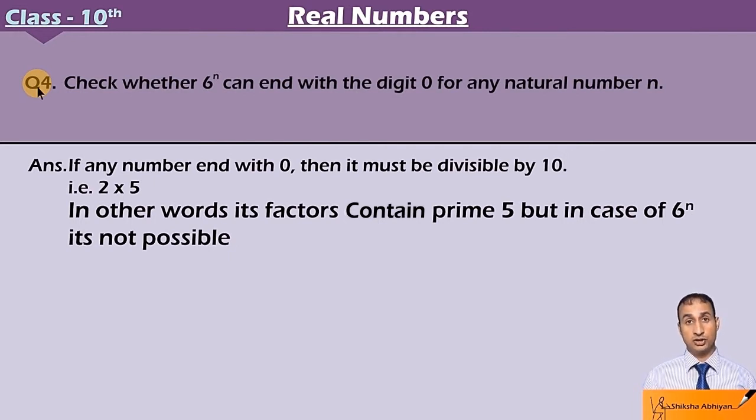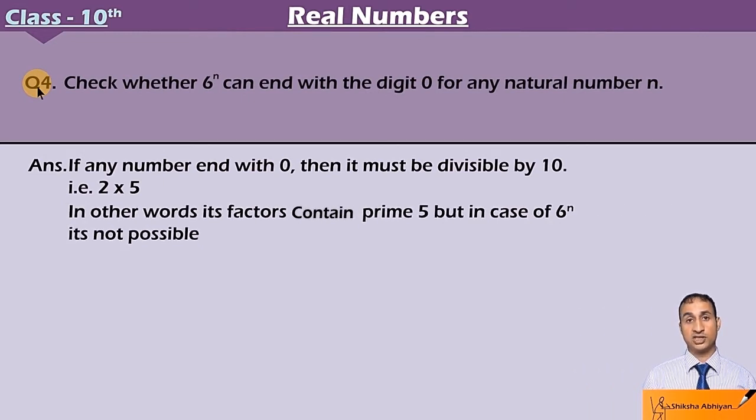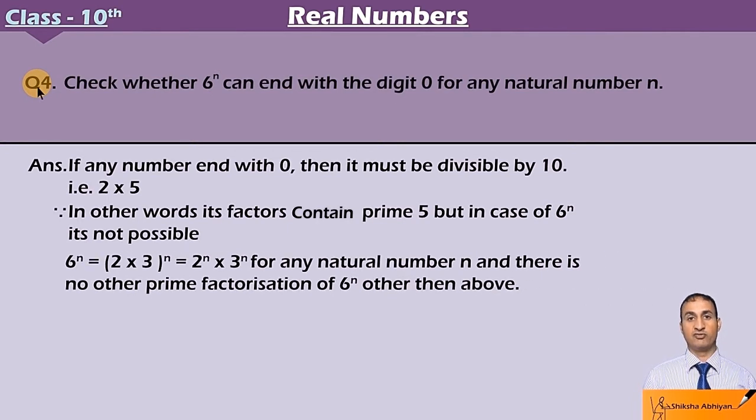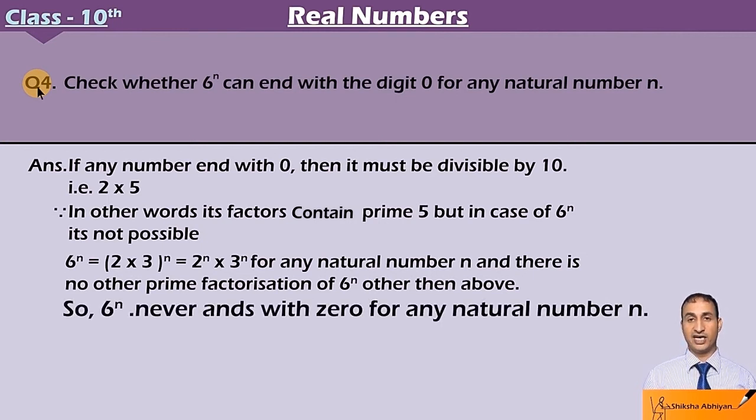But in case of 6^n, it is not possible. This is not possible because in its factorization, 5 will not come. Since 6^n equals (2 × 3)^n, and this will be 2^n × 3^n for any natural number n. And there is no other prime factorization for 6^n other than above. You have read this in the prime factorization theorem. So 6^n never ends with 0 for any natural number n.